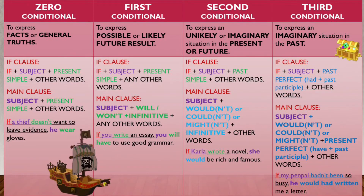The if clause and the main clause of every conditional is quite different. Zero conditional is used to express facts or general truths. It is formed by adding an if clause to a main clause. For example: if a thief doesn't want to leave evidence, he wears gloves.